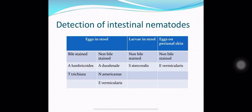Detection of intestinal nematodes can be done via stool sample — detection of eggs in stool, detection of larvae in stool, or detection of eggs on perianal skin. Eggs in stool include two types: bile-stained and non-bile-stained. Bile-stained eggs include Ascaris lumbricoides and Trichuris trichiura. Non-bile-stained eggs include Ancylostoma duodenale, Necator americanus, and Enterobius vermicularis.